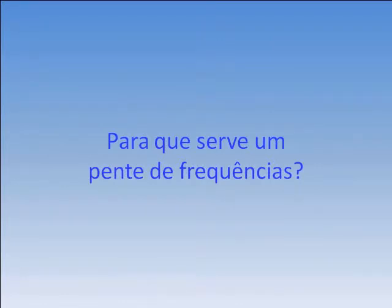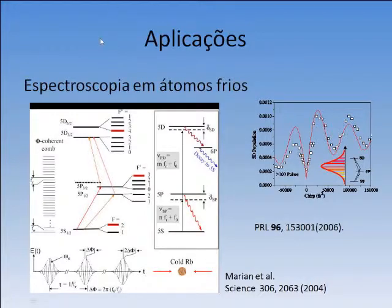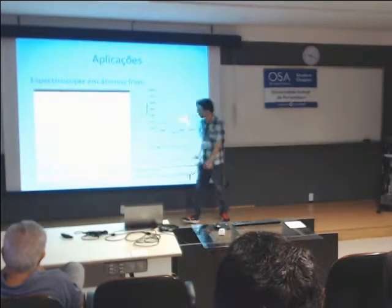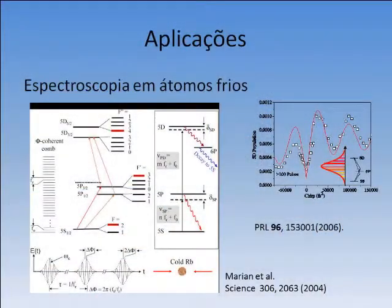Vou falar de algumas aplicações de pente de frequência para motivar o que vem a seguir. Uma coisa é a espectroscopia de átomos frios. Esse é um artigo de 2004 e outro de 2006, com rubídeo 87 numa armadilha magneto-ótica. Você pode usar um laser CW, que tem apenas uma frequência, para fazer a espectroscopia do átomo frio. Ou você pode usar um pente, que tem várias frequências com uma relação de fase bem estabelecida entre elas, e provar vários estados do rubídeo de uma vez só.